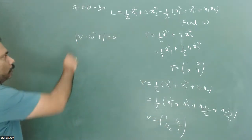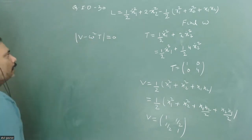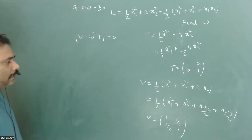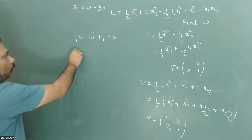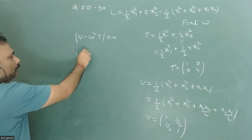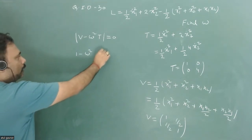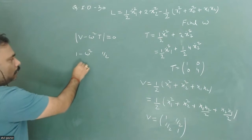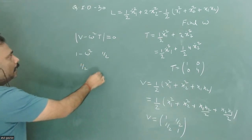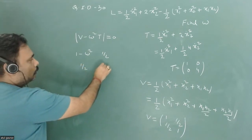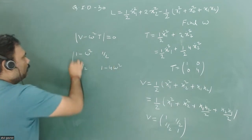Now we set up the secular equation: det(V minus omega squared T) equals zero, giving the matrix: [1 minus omega squared, 1/2; 1/2, 1 minus 4*omega squared], and this determinant must equal zero.